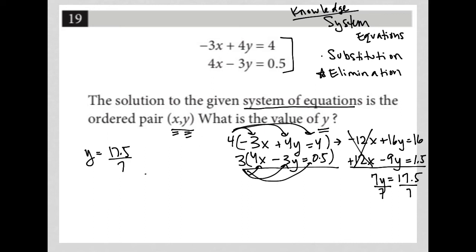I'm going to simplify that and say, how many times does 7 go into 17.5? 7 goes in twice, that's 14. 17 minus 14 is 3, bring down the 0.5.